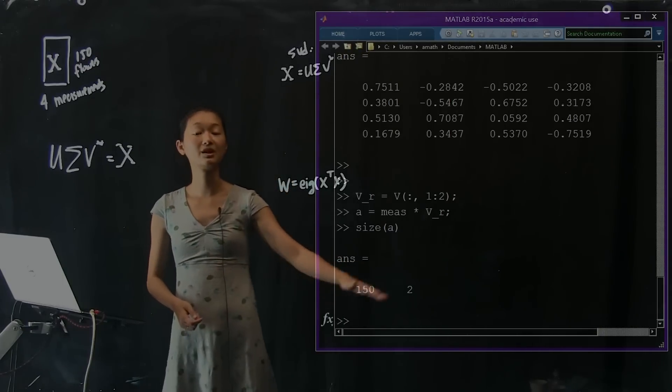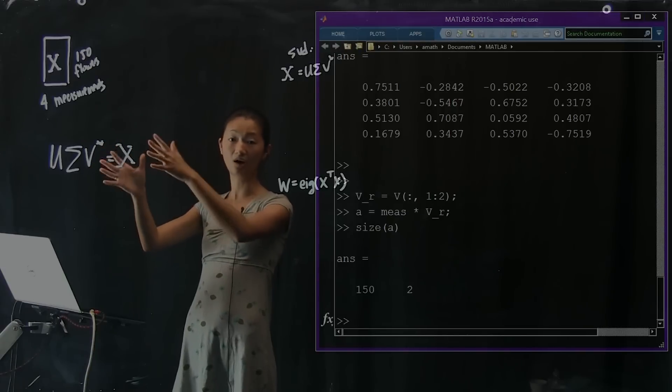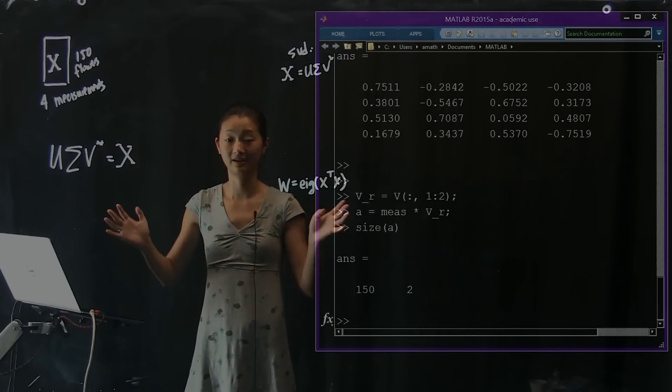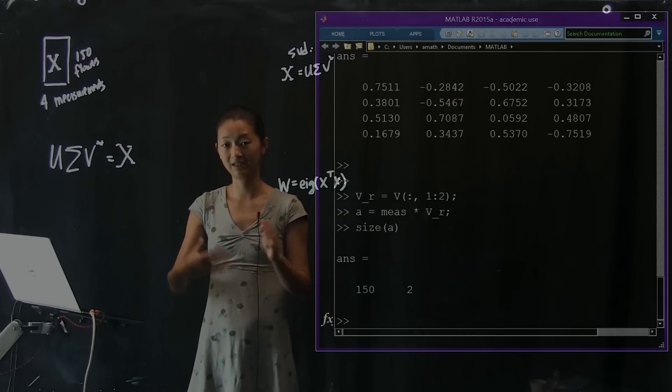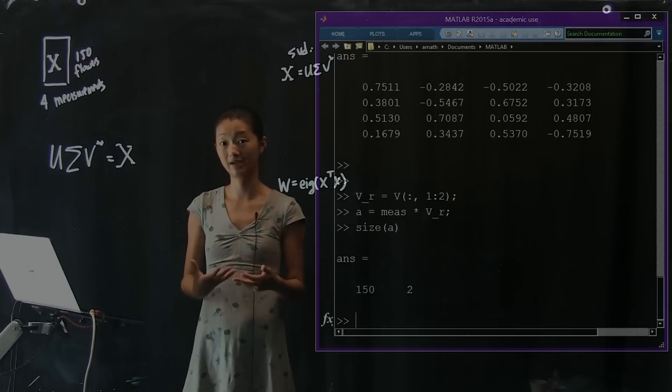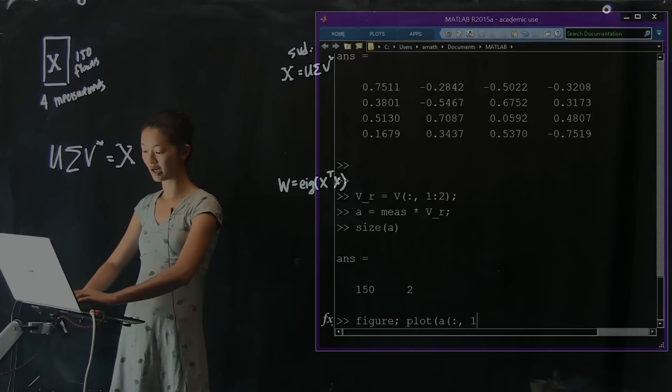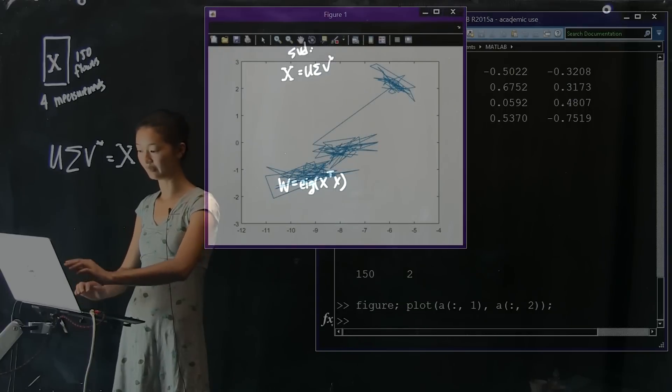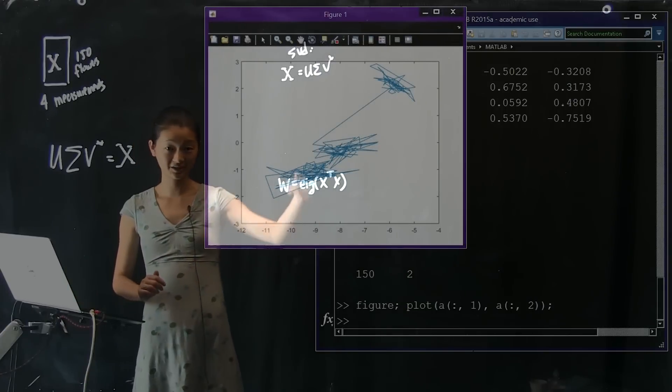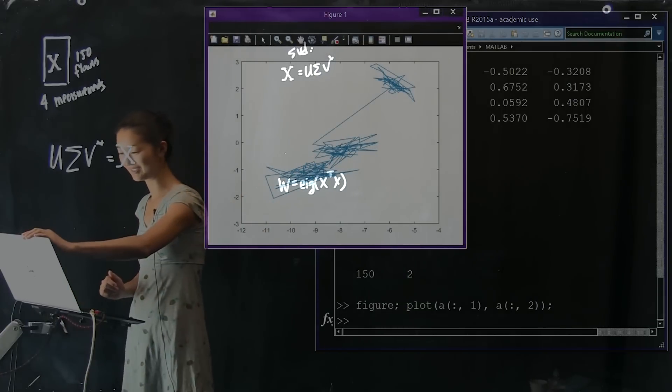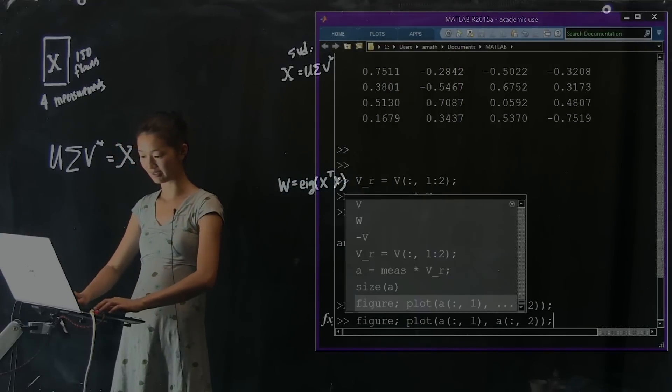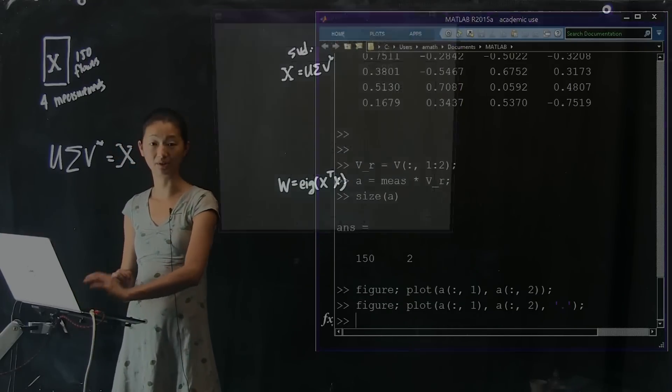And what I'm going to end up with is a projected matrix A that has the same number of flowers as before, but instead of having four numbers explaining each of them, I now have two numbers explaining each of them. And I like that because now I can plot these two. And those two dimensions, these two PCs actually incorporate all four measurements. So I'm not ignoring anything. I'm just aggregating the information in such a way that I can look at it on a piece of paper a little more easily. So if I wanted to plot that, I'm going to make a figure. I'm going to plot each column of A as one of the axes.